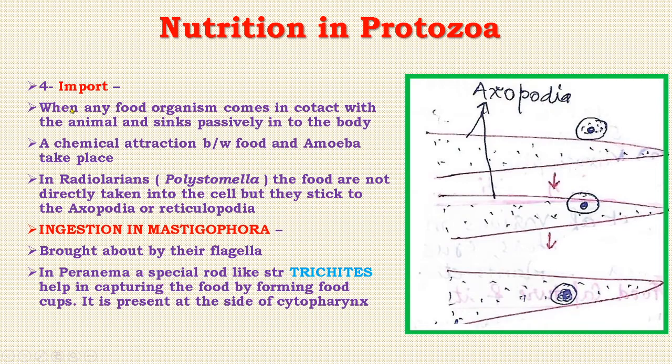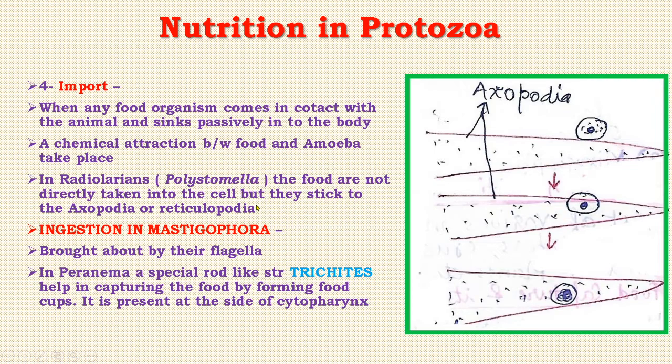The fourth type is import. When any food organism comes in contact with the amoeba, it sinks passively into the body. There is also a chemical attraction between food and amoeba. In radiolarians, such as Polystomella, the food is not directly taken into the cell but sticks to the exopodia or reticulopodia, and later gets digested in the food vacuole.